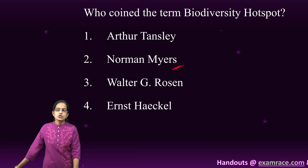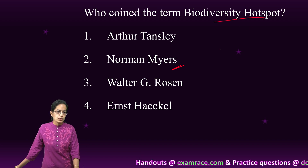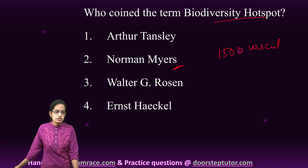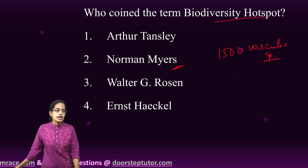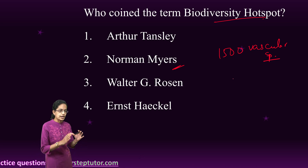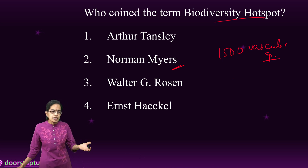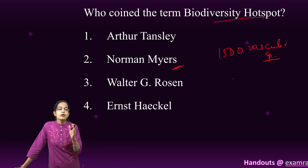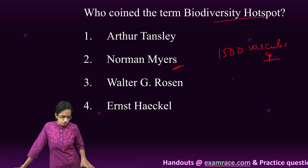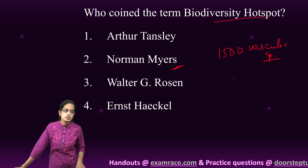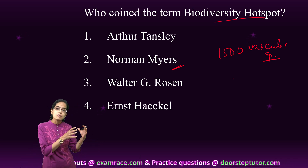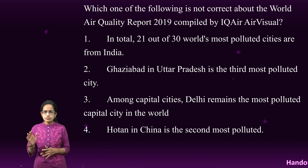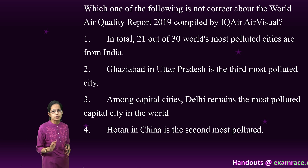Norman Myers talked about the term biodiversity hotspots. There are nearly 500 vascular plant species that have been discovered as endemic, and there is a categorization where 30 percent or less of the original vegetation should be covered to qualify as a biodiversity hotspot. This term was used by this British ecologist to understand rich biological communities of plants, animals and microorganisms.